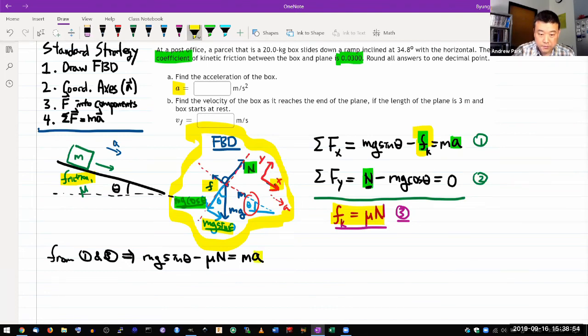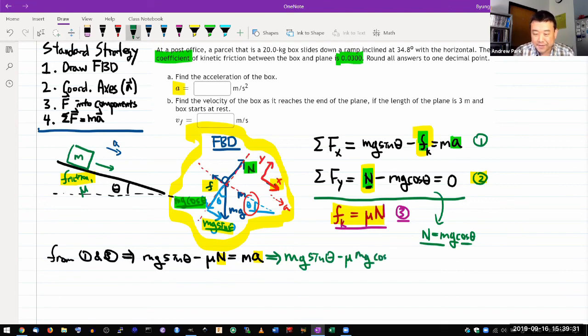Fortunately, equation two has the normal force in terms of other things. I think they are all known. So let me solve that for normal force. When I solve that for normal force, I get normal force is equal to mg cosine theta. Now I can use a substitution again. Plug this into this equation here. Then I get mg sine theta minus mu mg cosine theta is equal to mass times acceleration.